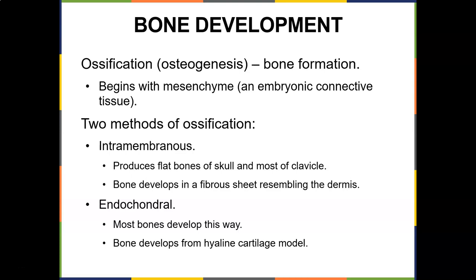Let's move on to actual bone development. The formation of bone is called ossification or osteogenesis, and there are two methods: intramembranous and endochondral. Both begin with soft embryonic connective tissue called mesenchyme.